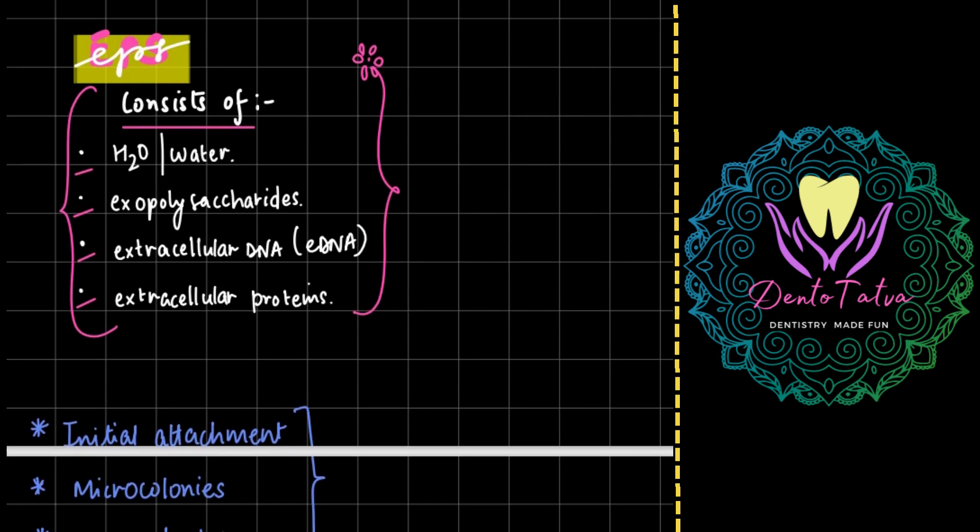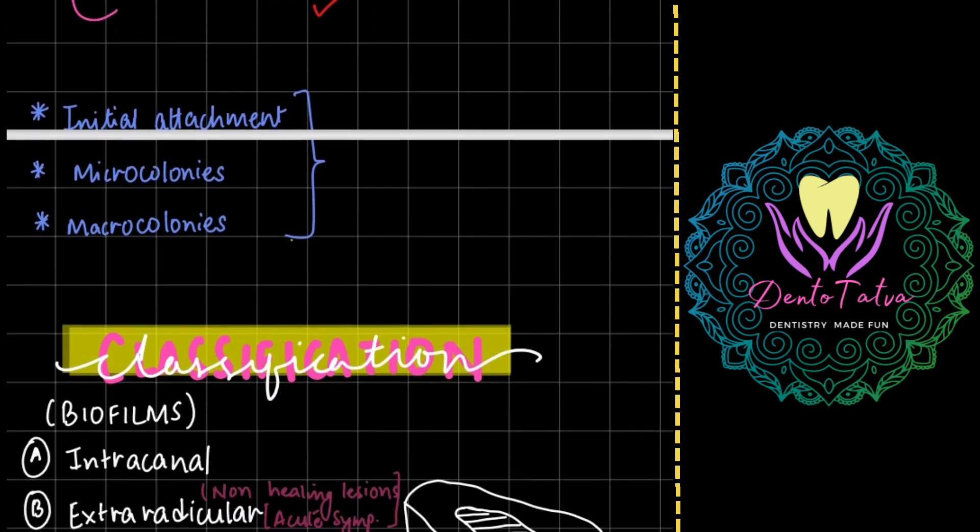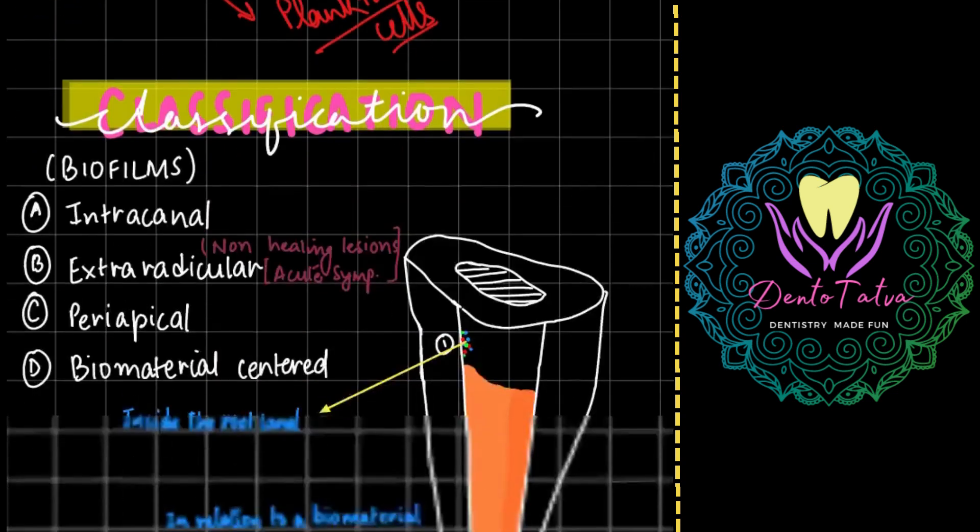If somebody asks what is EPS, EPS is consisting of - extracellular polymeric matrix is consisting of water that forms the majority of the content in the matrix, exopolysaccharides, there is eDNA or extracellular DNA, and extracellular proteins. To summarize: there is initial attachment, formation of microcolonies, microcolonies maturation, followed by dispersion and formation of planktonic cells, and the cycle will keep going.